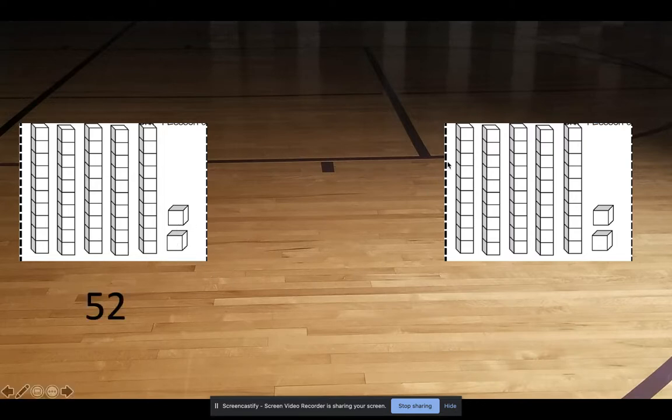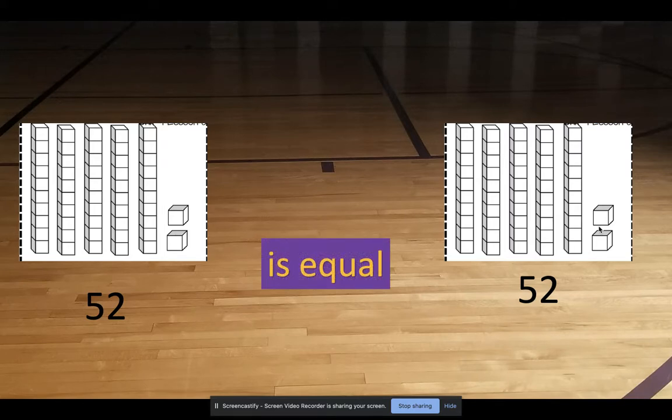Now let's count the one on the other side. 10, 20, 30, 40, 50, 51, 52. Oh, what do we have here? Do these two numbers look the same to you? They have the same amount of tens and they have the same amount of ones. So this is our chance to say that 52 is equal to 52.